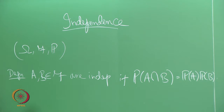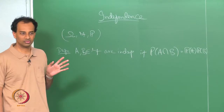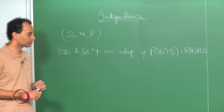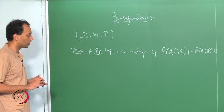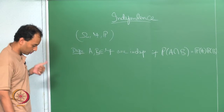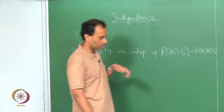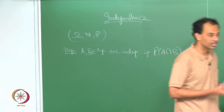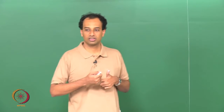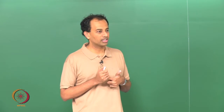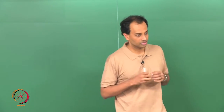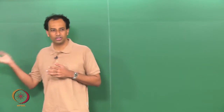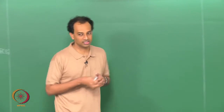Are there any questions? We discussed this in reasonable detail last class. Now I want to move on and define independence for n events, then for an arbitrary collection of events — possibly an infinite or even uncountable collection. Then we will define independence of sigma algebras, which is something you will not be familiar with. Independence of events you would have seen at various levels.